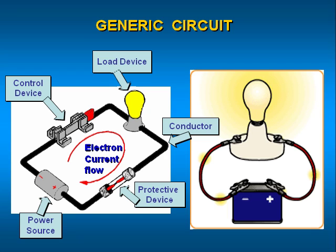The protective device is sensitive to the amount of current flowing in the circuit. If the current exceeds a specified amount, the protective device will open the circuit and break the conducting path in order to halt the flow of electrons.